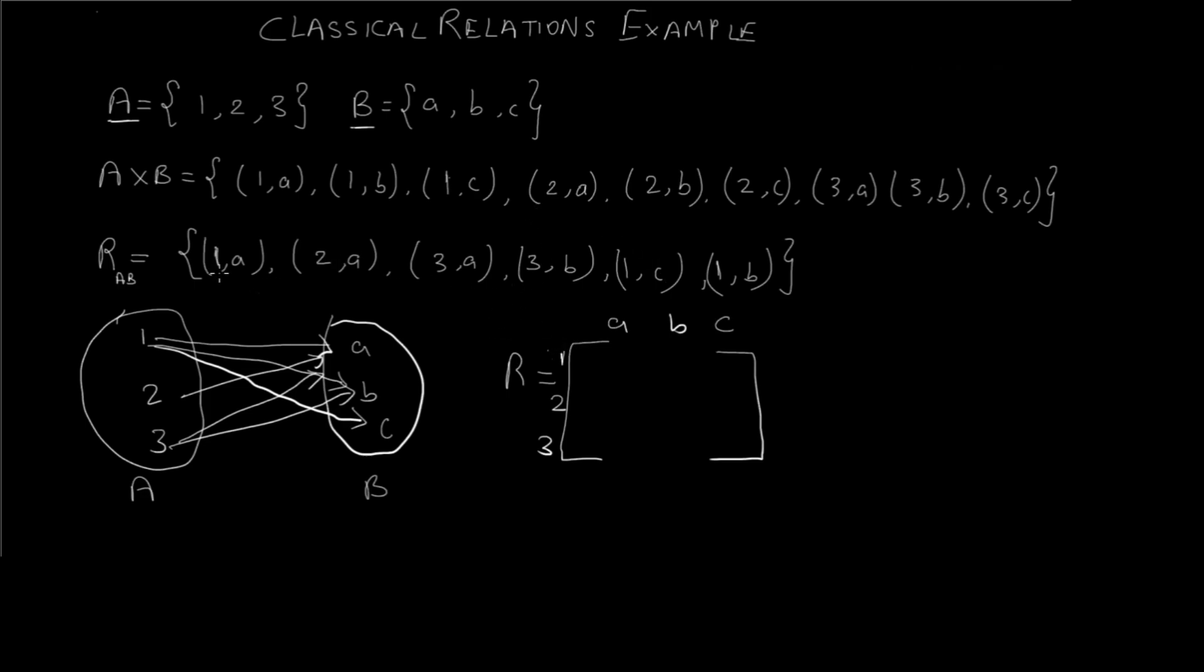To map them we just have to find out the pairs from the relation. We know (1,a) is present in the relation so we have to find 1 and a and write a 1 over here. We have (2,a) so 2 and a, again 1. (3,a) again 1. Then we have (3,b) so this is 3 and this is b, so again 1 over here.